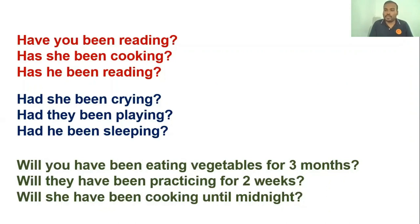For future perfect continuous question formation — actions that will stop in the future: 'Will you have been eating vegetables for three months?' — are you going to eat vegetables for three months? After three months, no — there is an end point. 'Will they have been practicing for two weeks?' — are they going to practice for two weeks? After two weeks they are not; there is an end time. 'Will she have been cooking until midnight?' — is she going to cook until midnight? There is a time limit.